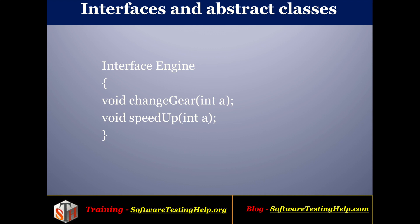Now we will see how to declare an interface. You have to use the keyword 'interface' and give the interface name. Here we have given the declaration for the interface 'Engine'. Inside the braces we have to write all the methods for our interface. You have to give only the method declaration — you should not have any implementation inside the method. So we are declaring 'changeGear' and 'speedUp' as the two interface methods.